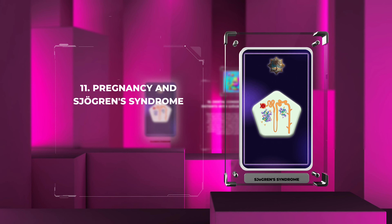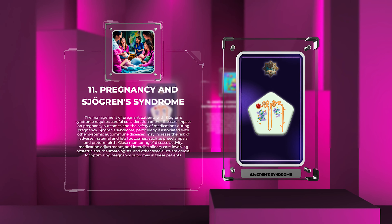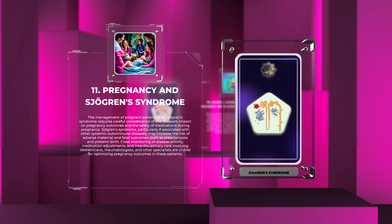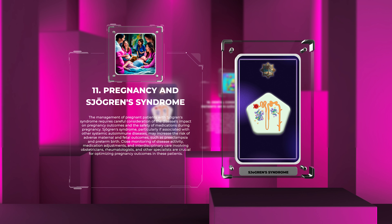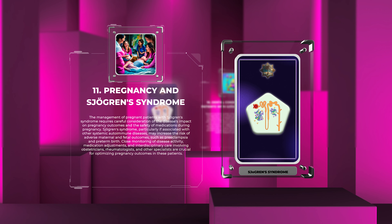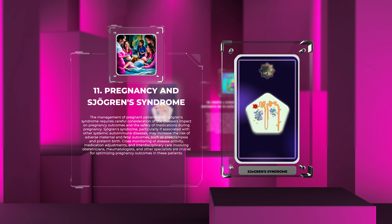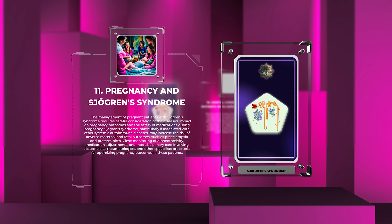The management of pregnant patients with Sjogren's Syndrome requires careful consideration of the disease's impact on pregnancy outcomes and the safety of medications during pregnancy. Sjogren's Syndrome, particularly if associated with other systemic autoimmune diseases, may increase the risk of adverse maternal and fetal outcomes, such as preeclampsia and preterm birth. Close monitoring of disease activity, medication adjustments, and interdisciplinary care involving obstetricians, rheumatologists, and other specialists are crucial for optimizing pregnancy outcomes.